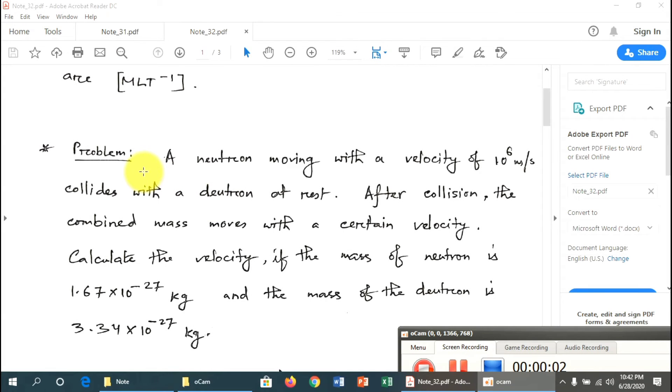I am going to talk about momentum. A neutron moving with a velocity of 10^6 m/s collides with a deuteron at rest. After collision, the combined mass moves with a certain velocity. Calculate the velocity if the mass of the neutron is 1.6 × 10^-27 kg and the mass of the deuteron is 3.34 × 10^-27 kg.